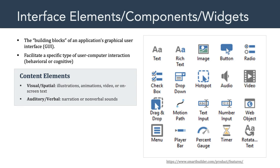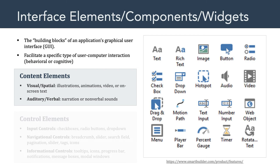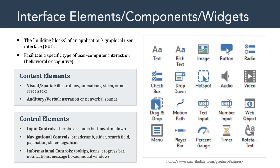Examples of control elements include input controls such as checkboxes, radio buttons, and drop-down menus. Other examples include navigational controls such as breadcrumbs, sliders, and search fields. There are also informational controls such as tooltips, progress bars, and notifications.